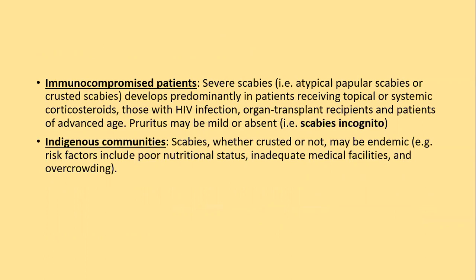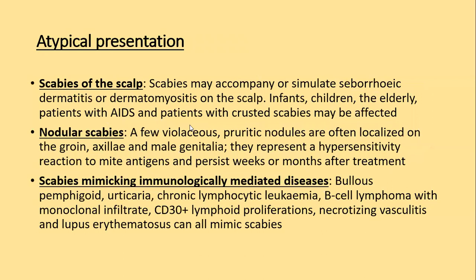In the elderly, burrows commonly occur on palms and soles and may be numerous. Truncal papulosquamous lesions often surrounded by burrows are also common in immunocompromised patients. Severe or atypical papulosquamous scabies or crusted scabies develop in patients receiving topical or systemic corticosteroids, those with HIV infection, organ transplant recipients, and patients of advanced age. In such patients, pruritus can be mild or absent and other signs of scabies are not present — hence it is called scabies incognita. In indigenous communities, scabies, whether crusted or not, may be endemic.